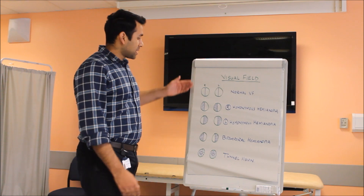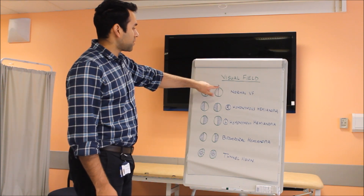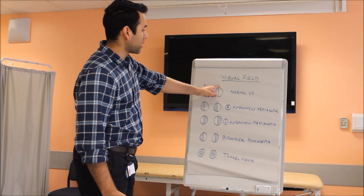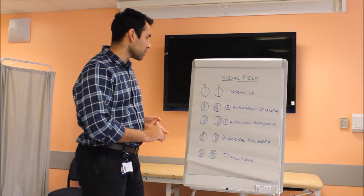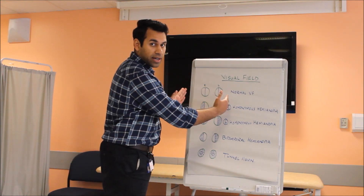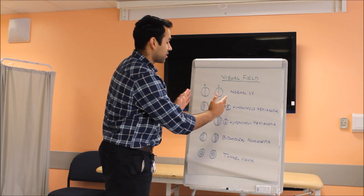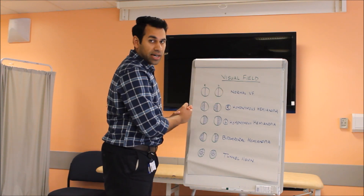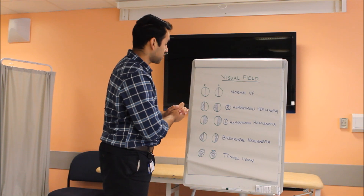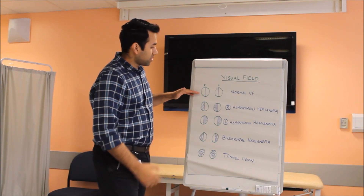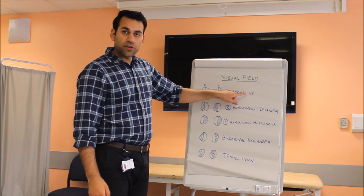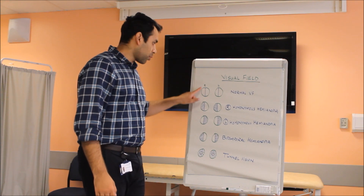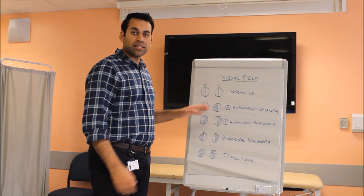As you can see on the chart, I've made a left side and a right side — this is how you will see the patient, so this will be the patient's left side and the right side. The outer sides of the eyes are the temporal sides, known as temporal vision, and the inner side is the nasal vision. The first diagram shows a normal visual field, where the temporal and nasal sides on both eyes are normal.